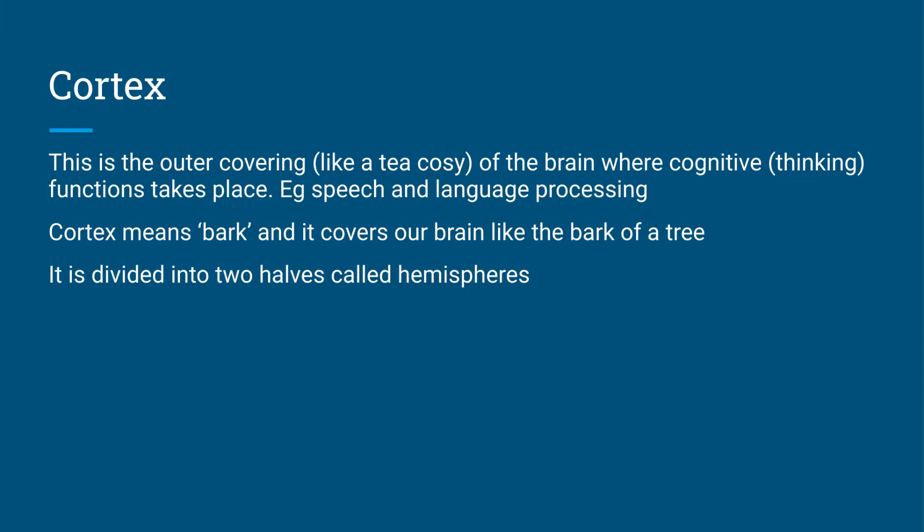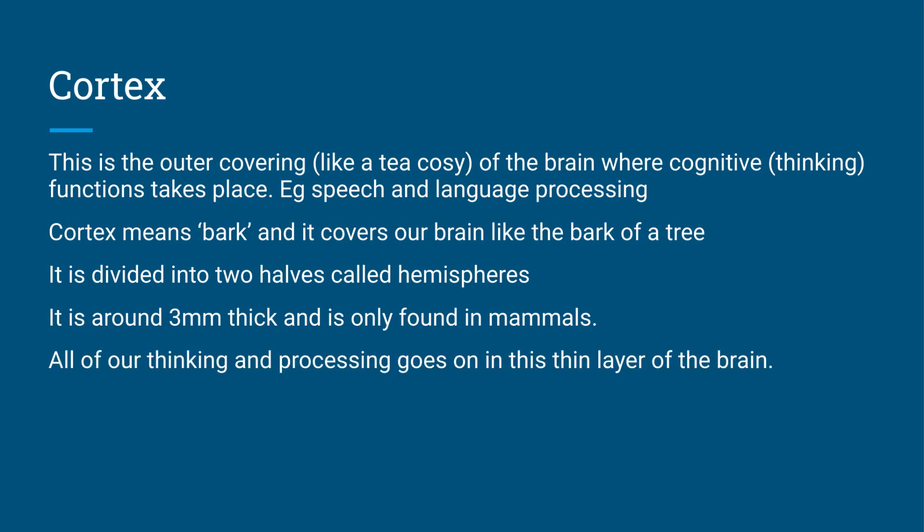And it's divided into two halves, and we're going to call those the hemispheres—the right hemisphere and our left hemisphere. So it's about three millimeters thick, runs around that whole outside of your brain, and it's actually only found in mammals. All of our thinking and processing goes on in that thin layer of the brain. Although it's only three millimeters, it is actually folded many, many times, so it is a lot larger than you might think.